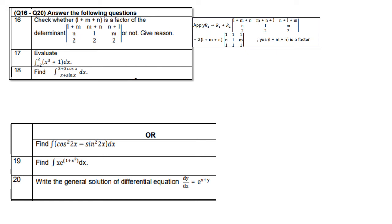Question 16: check whether L + M + N is a factor of the determinant with rows [L+M, M+N, N+L], [N, L, M], [2, 2, 2]. Apply R1 → R1 + R2 to get L+M+N throughout the first row. We can then take L+M+N as a common factor, so yes, L+M+N is a factor of the determinant.